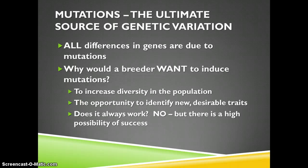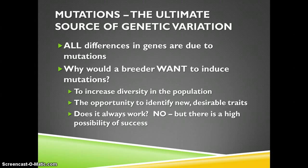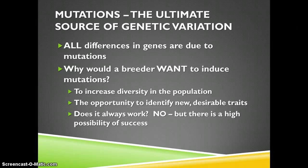We're going to start off talking about mutations. Mutations are the ultimate source of genetic variation because that's where genes get changed. All differences in genes are due to mutations, whether caused by radiation, some other chemical, or by a misreading or miscopying of the DNA. One reason a breeder might want to introduce mutations in the population would be to increase diversity in the population, maybe giving you different colors of flowers than were available before.